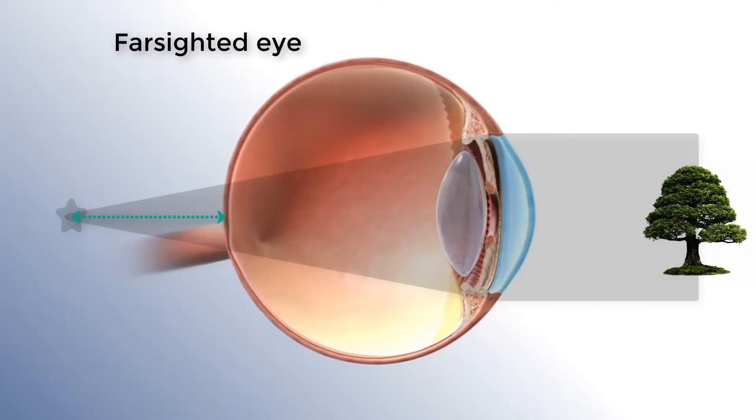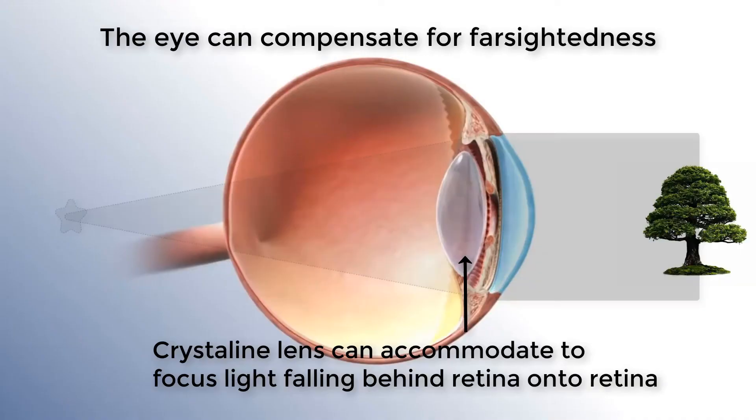In the case of farsightedness, the cornea is flatter than it ought to be, so it doesn't have enough focusing power and light misses the retina, focusing behind it. The further behind the retina it focuses, the more farsighted you are. However, the eye does have a response — it can compensate through a process called accommodation via the second lens in the eye, the crystalline lens. The crystalline lens changes shape to shift the light forward and onto the retina, as long as it's not too far behind and not too much work for the lens.